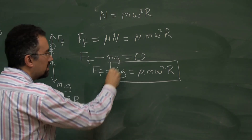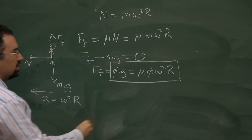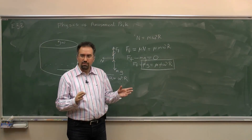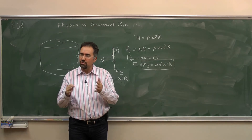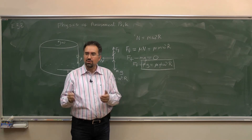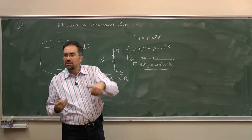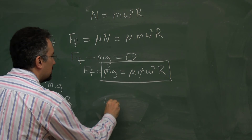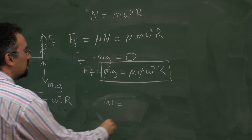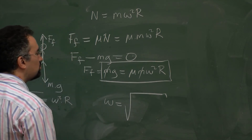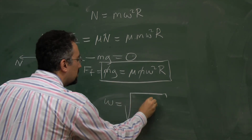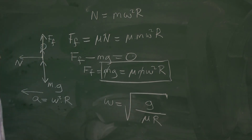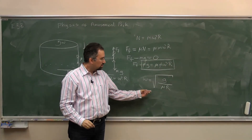The masses cancel, which is a key result. I can solve for omega or for mu. Since omega is the parameter I can control when operating this cylinder, I'll solve for omega: omega equals the square root of g over (mu times r).